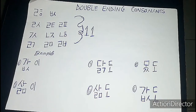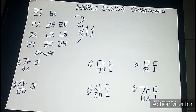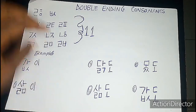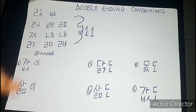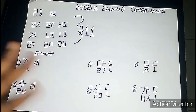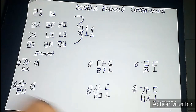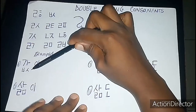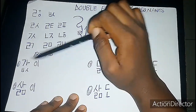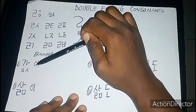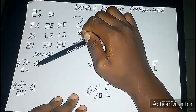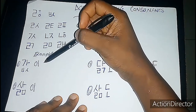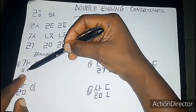The final thing we're going to learn today is double-ending consonants. You don't have to memorize all of them, but you need to know how to read them when you see them. There are 11 double-ending consonants. When the second consonant has no phonetic value, you transfer the first consonant's sound to the next syllable.